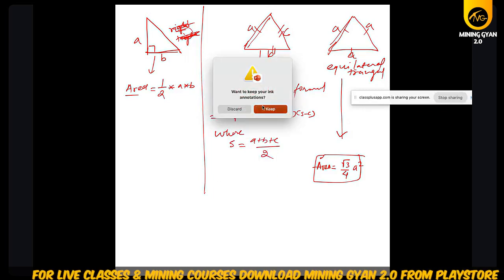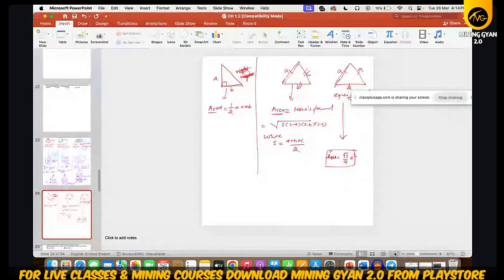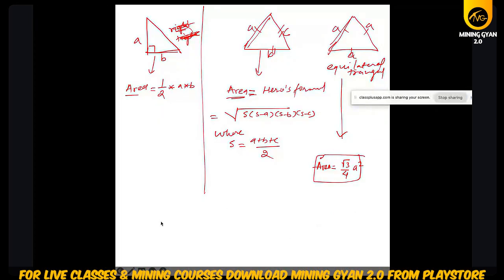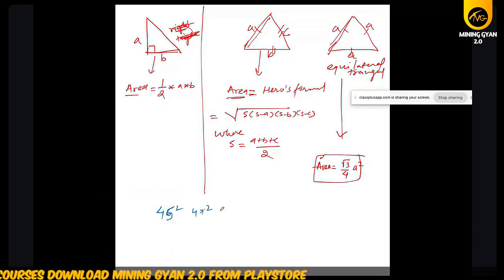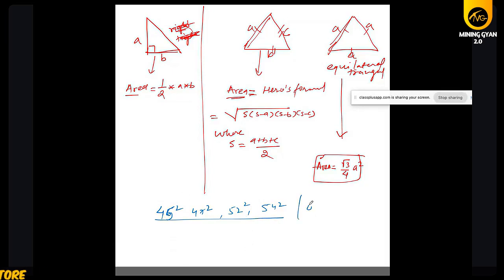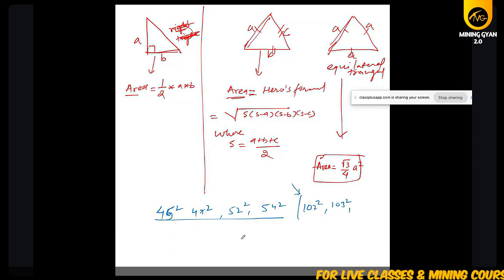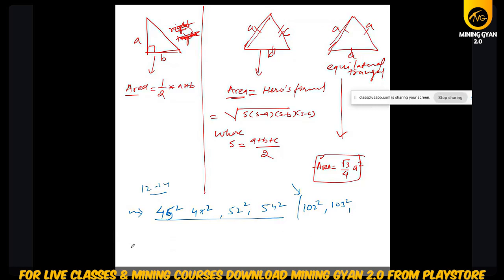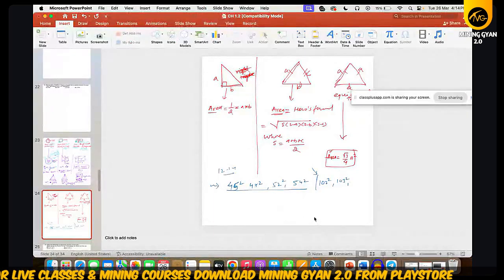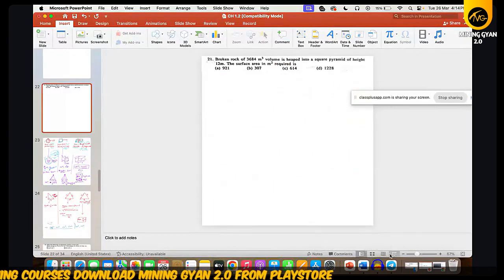Practice squares: 25², 27², 52², 54², 102², 103² — I told you to practice these at home and revise. Out of 12 to 14 people, maybe some have not revised. It is up to you whether you want more marks or want to face problems in the examination.